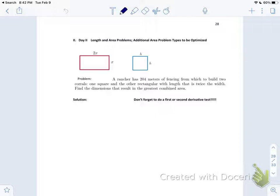We have to start thinking outside the box with these problems. It's the same situation we've had in 2.5—we're trying to optimize things but we have different scenarios that we're going to work in. A rancher has 204 meters of fencing from which to build two corrals. One corral is square (h by h) and the other as rectangular with length that is twice the width. Find the dimensions that result in the greatest combined area.